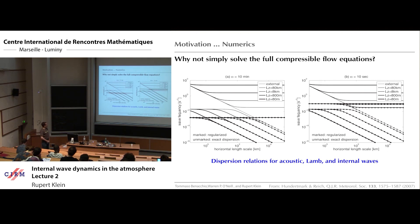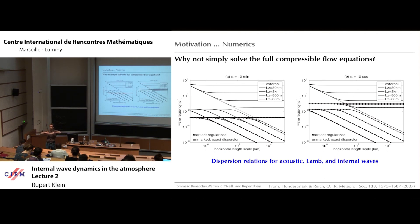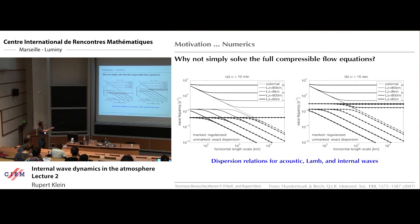Now let's look at what happens when integrating this time implicitly with a large time step — say 10 second time steps. The dotted curves are the dispersion relations for the same modes as they come out of a numerical discretization with an implicit scheme. Whenever your numerical method with a 10-second time step can resolve the wave in time, the dispersion relation comes out rather accurately. But if your time step is too large to resolve the fast oscillations, they all get slowed down to the same frequency — essentially 2 pi over delta t. And if you make larger time steps, even some of the slower internal gravity waves get slowed down to that speed.